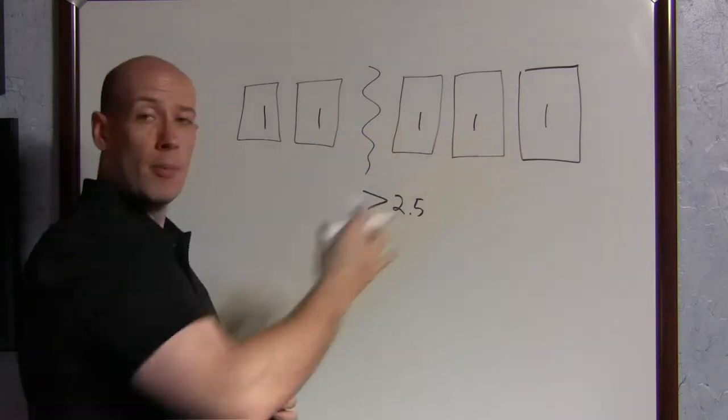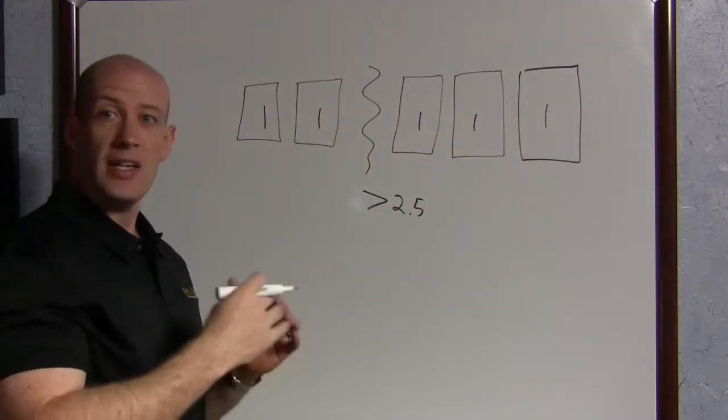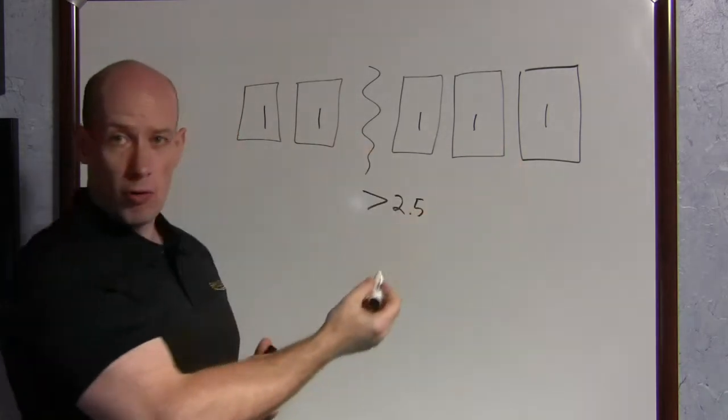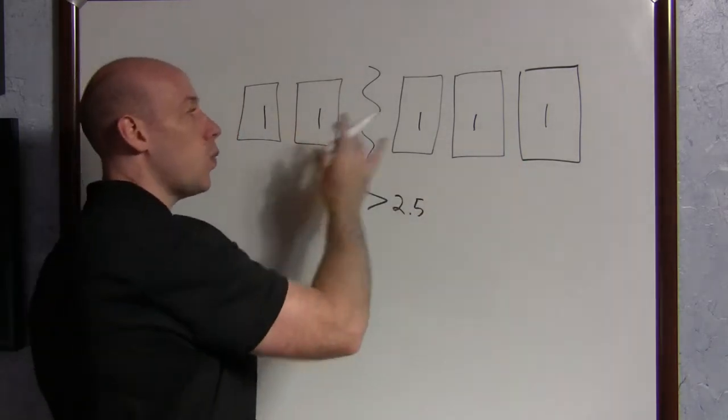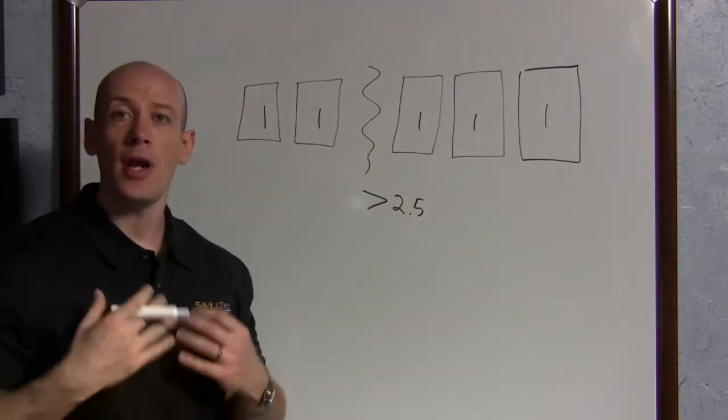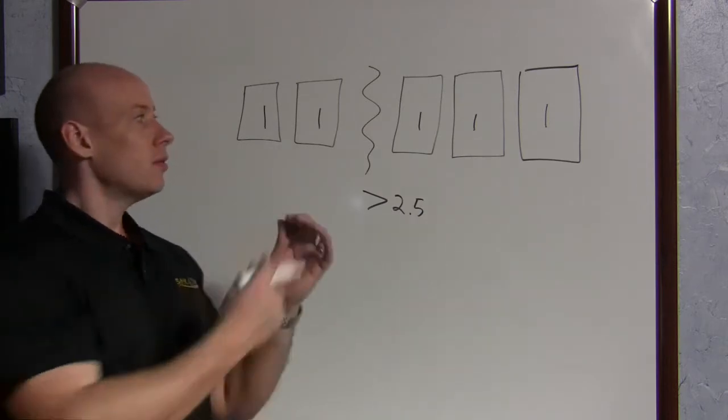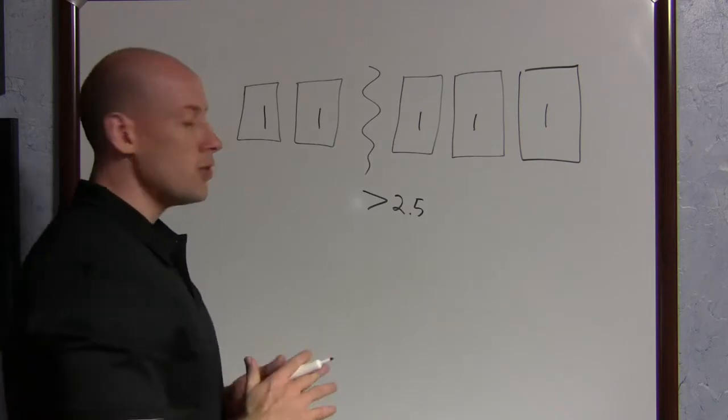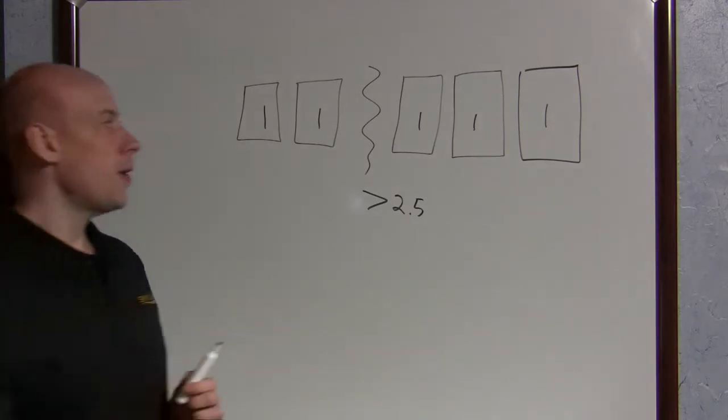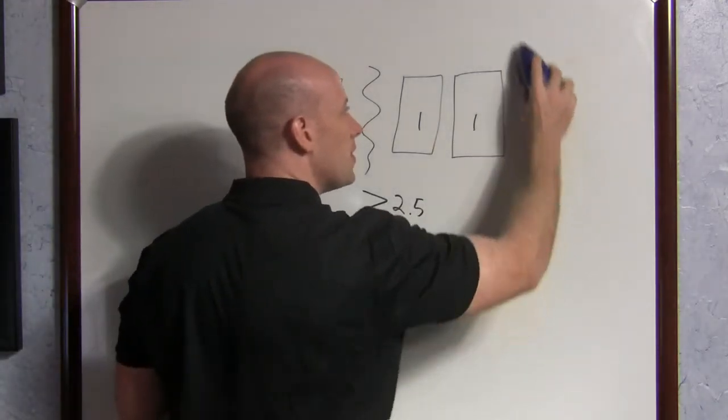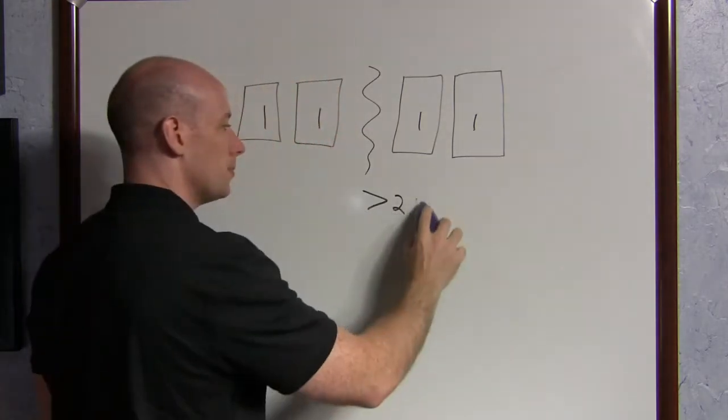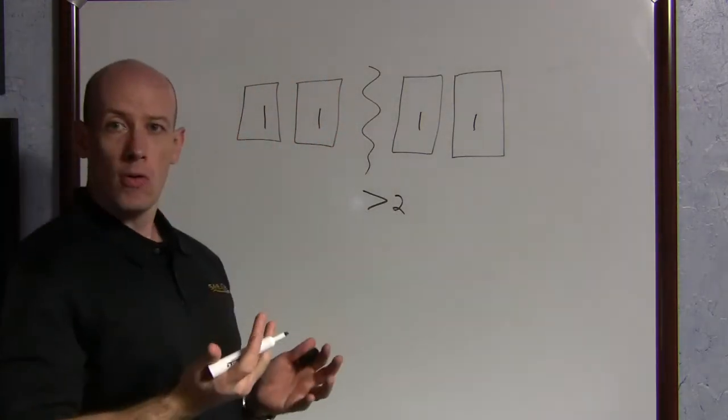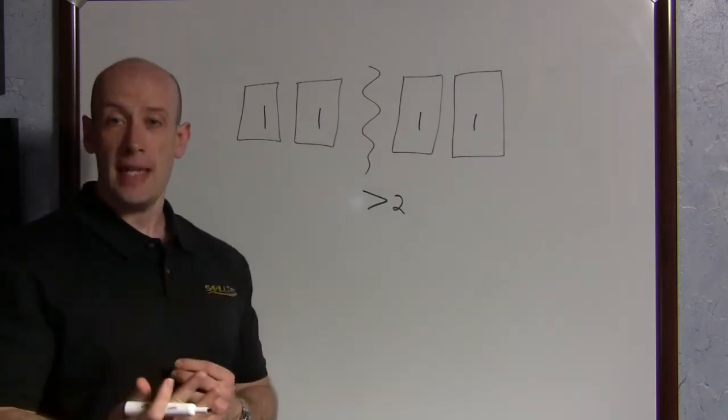If I have an odd number of hosts, so three, five, seven, nine, whatever, I can just use node majority. Each node has one vote, and as long as I have more than half the number of votes, I get Quorum, and I can offer services. But suppose I don't have that, suppose I'm back to the idea of I have an even number of nodes. Well now, I can't make Quorum. So we add a witness in.